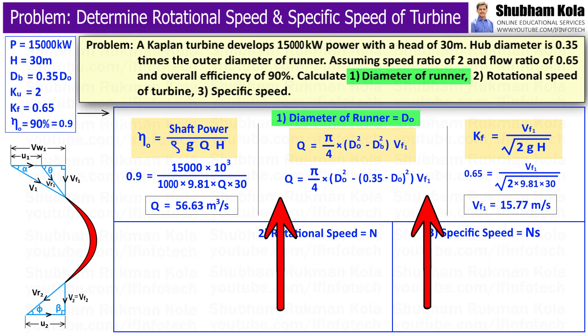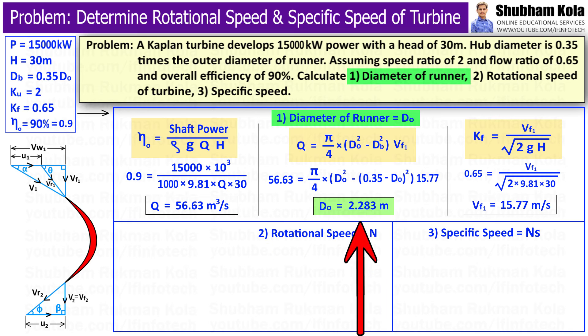By substituting the values of discharge Q and Vf1 into the discharge equation, we get the outer diameter of the runner Do equal to 2.283 meters.